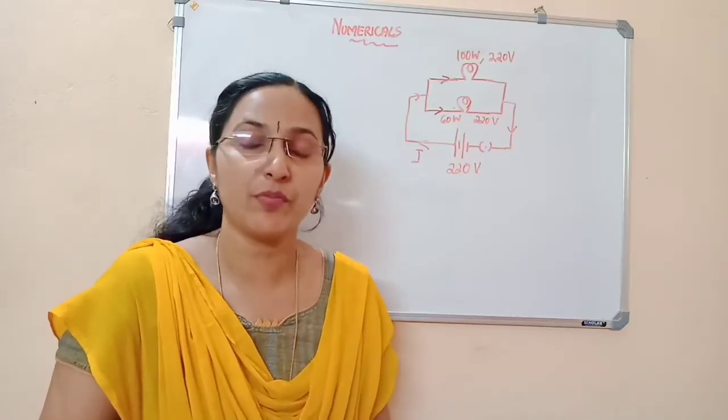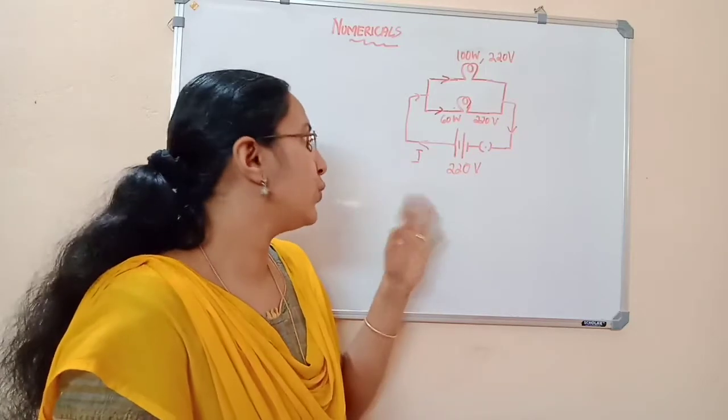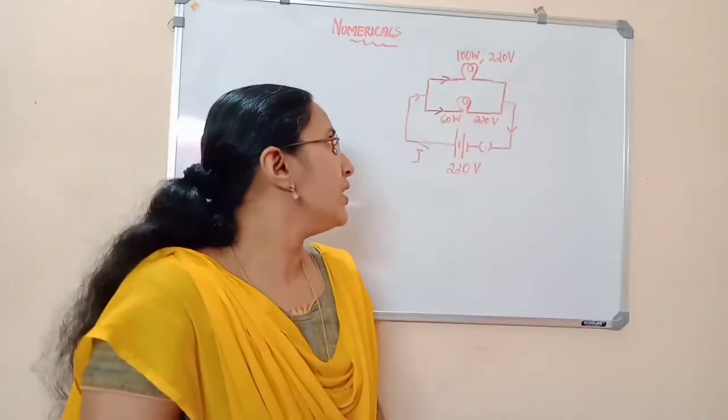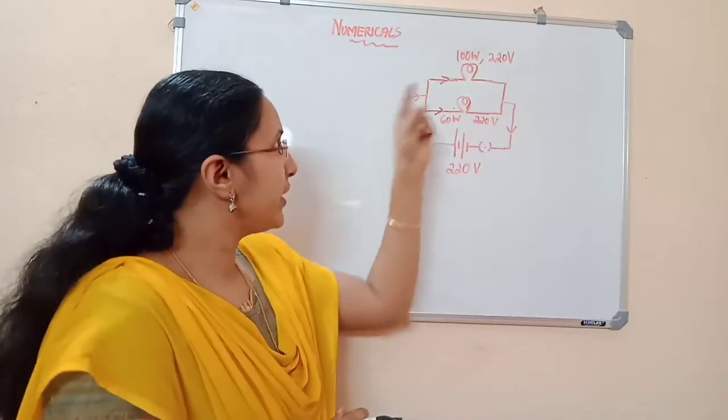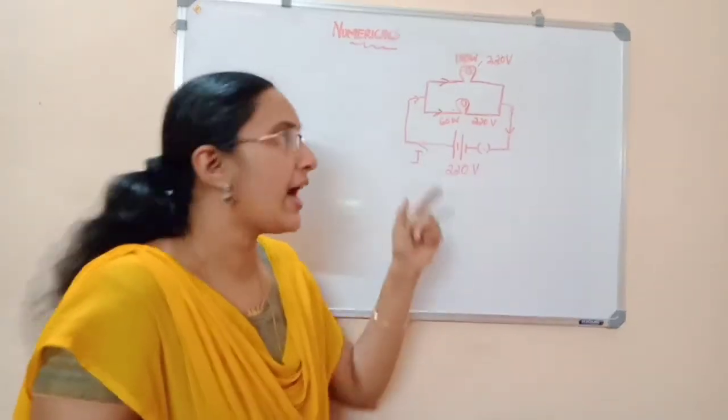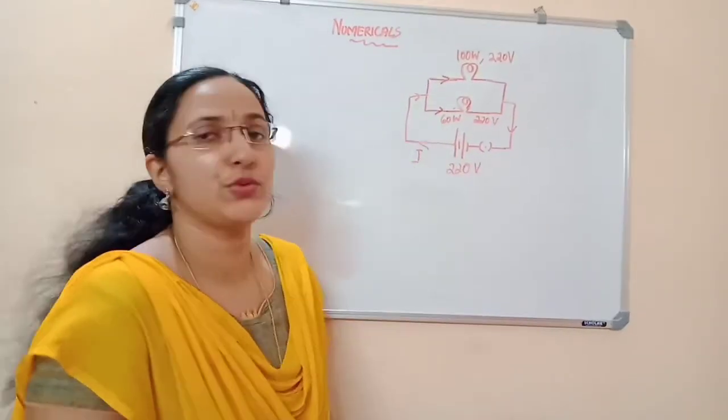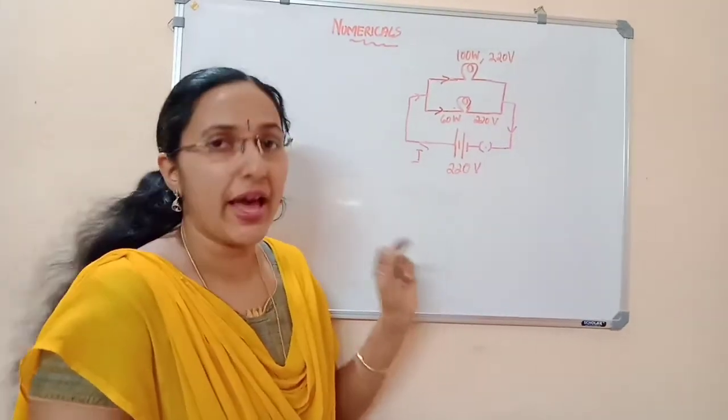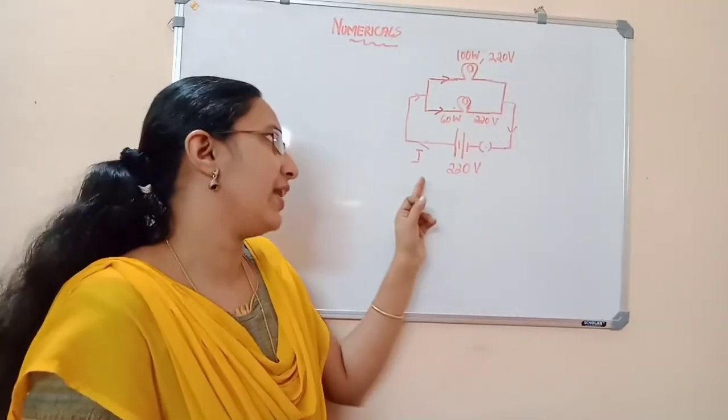We can do a simple problem based on power, voltage, and current. Here, two bulbs—one rated 100 watt 220 volt and another rated 60 watt 220 volt—are connected in parallel to a 220 volt mainline.